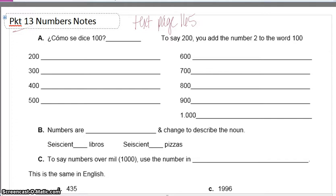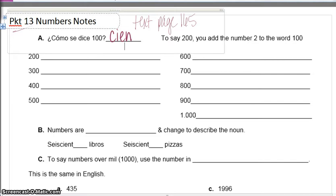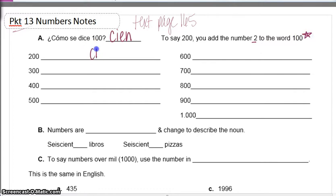¿Cómo se dice 100? How do you say 100? 100 in Spanish is cien, and that's the basis for every other number that's going to come after it. To say 200, you add the number 2 to the word 100. But 100 actually changes a little bit — it changes to cientos.